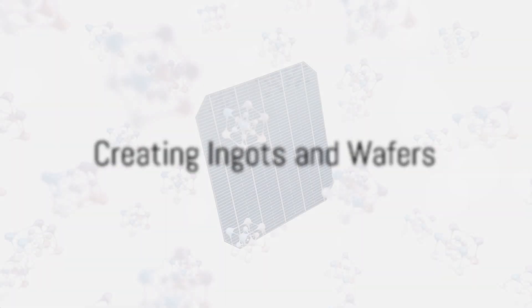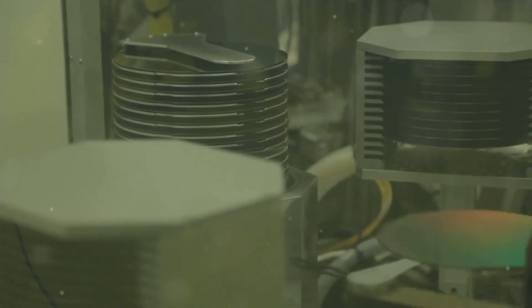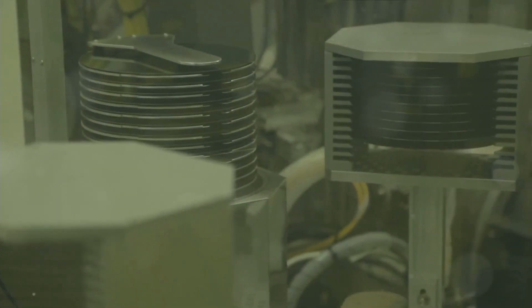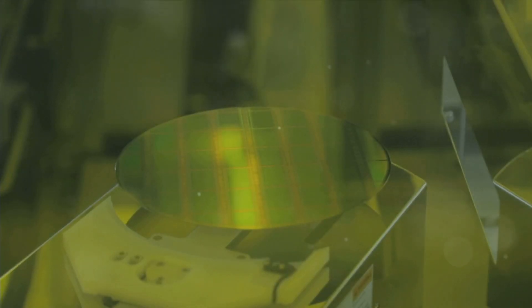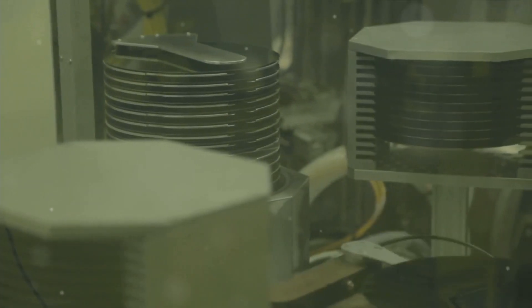With our purified silicon, we can now create the basic building blocks of our solar cells, the ingots and wafers. This journey starts by taking our high-purity polysilicon and melting it down. But we're not just making a silicon soup here. We're aiming for a single, large crystal of silicon, known as an ingot. To achieve this, we use a method called the Czochralski process.